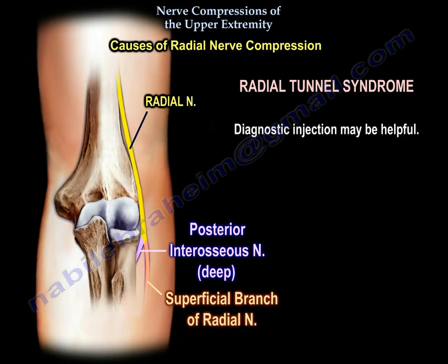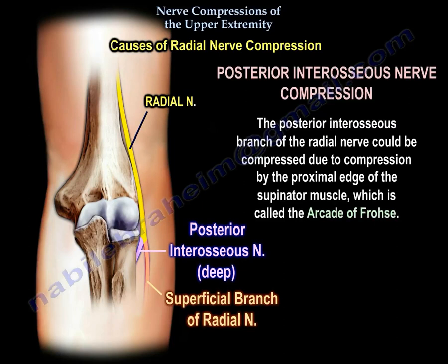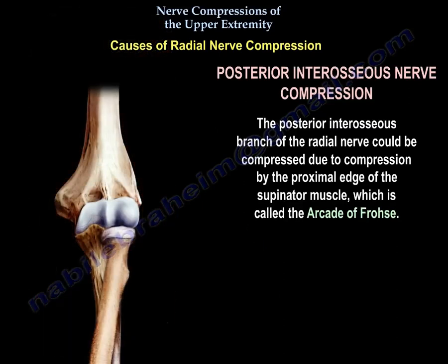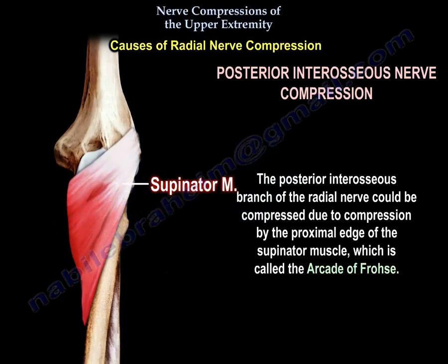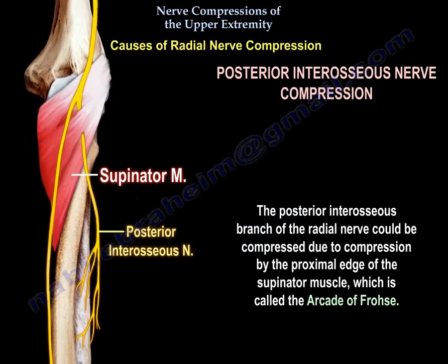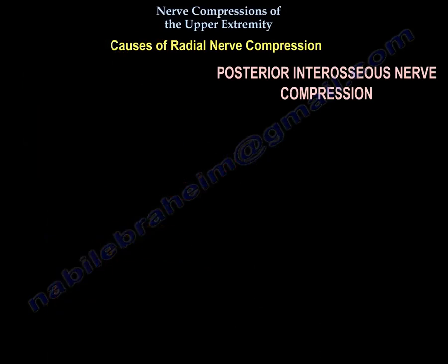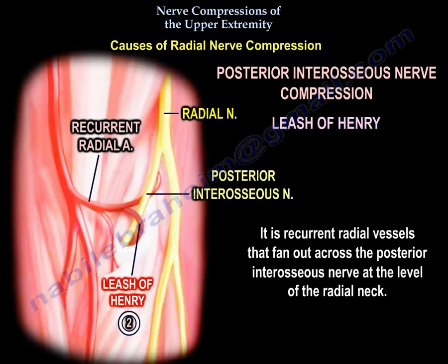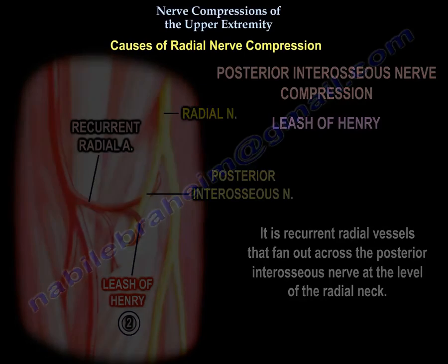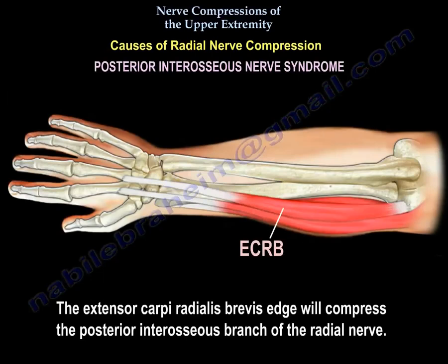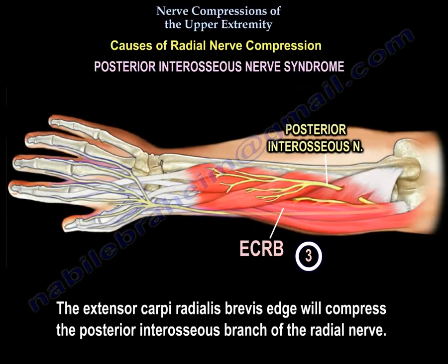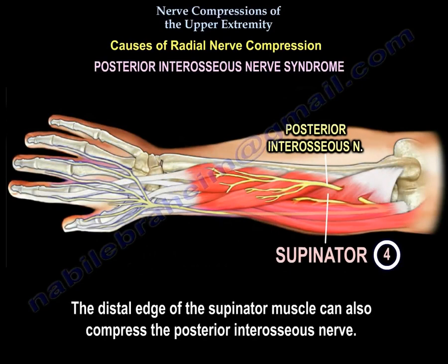Diagnostic injection may be helpful. The posterior interosseous branch of the radial nerve can be compressed by the proximal edge of the supinator, called the arcade of Frohse. It can also occur due to the leash of Henry — recurrent radial vessels that fan out across the posterior interosseous nerve at the level of the radial neck — or by the extensor carpi radialis brevis edge, or the distal edge of the supinator muscle.